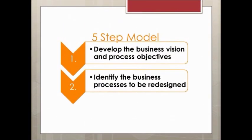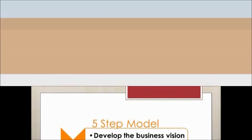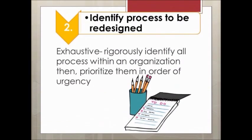Step 2: Identify the business processes to be redesigned. There are two approaches you can use to identify which processes need to be redesigned. The first is the exhaustive approach, meaning to regularly identify all processes within an organization and then prioritize them in order of urgency. Companies find it useful to classify each process to be redesigned in terms of beginning and end point, interfaces, and organizational units — in other words, the functions or departments that are involved.